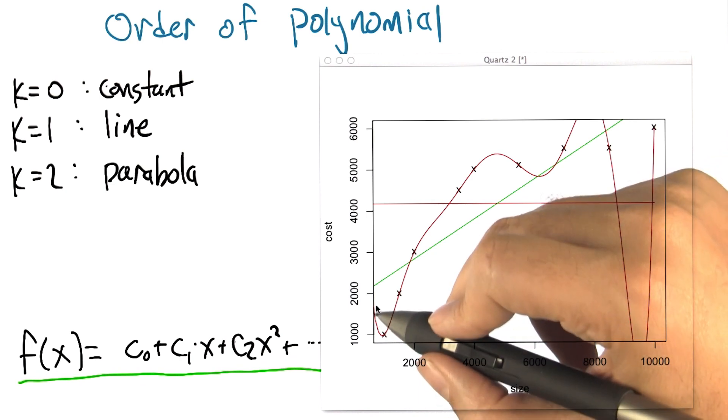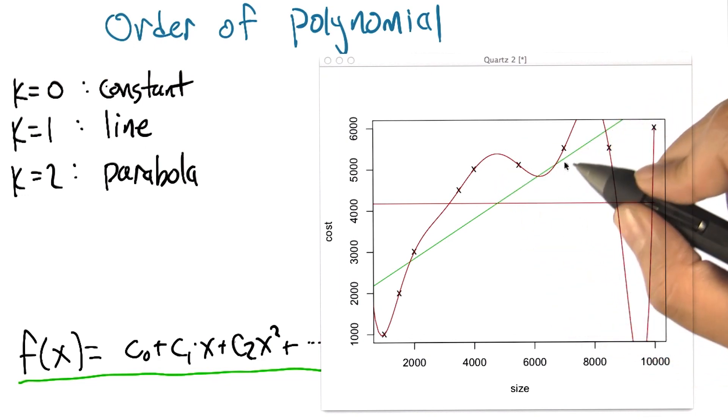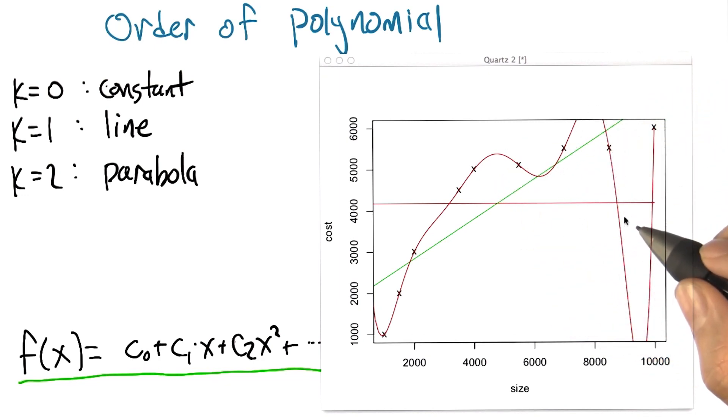And son of a gun, look what it did. It hit every single point dead on in the center. Boom, boom, boom, boom. It used all the degrees of freedom it had to reduce the error to essentially zero. Excellent.